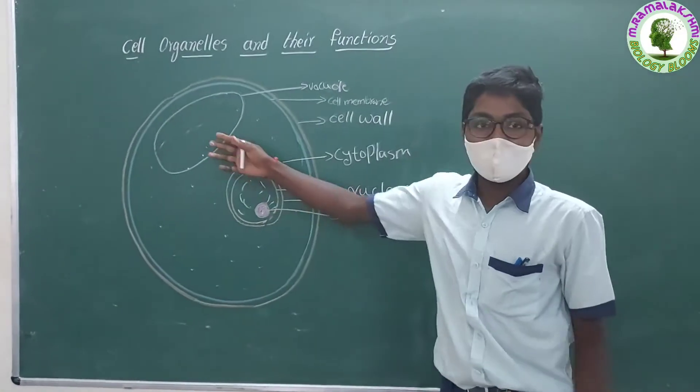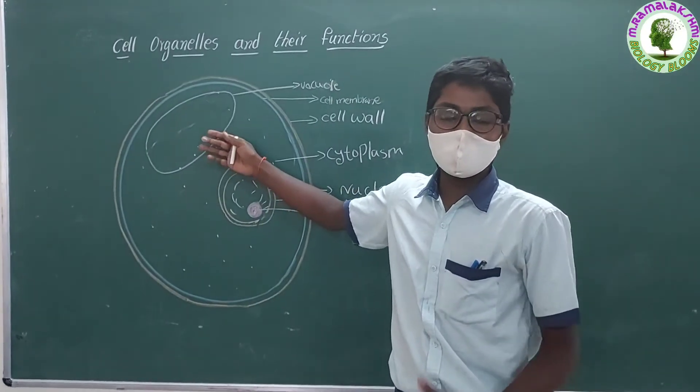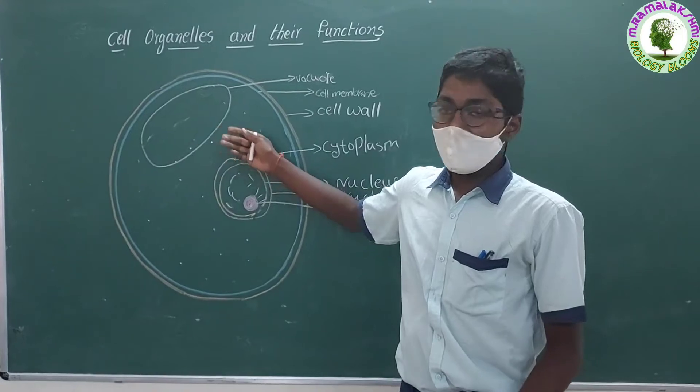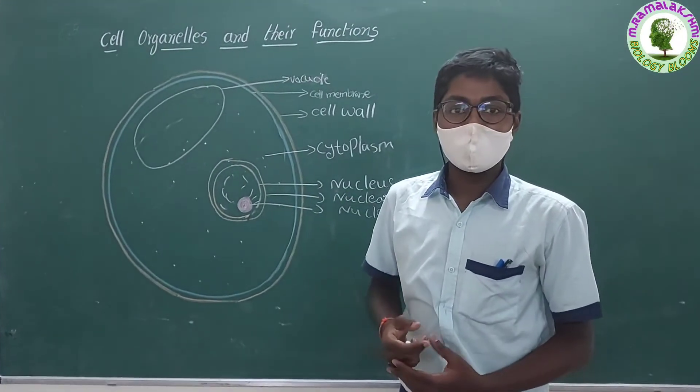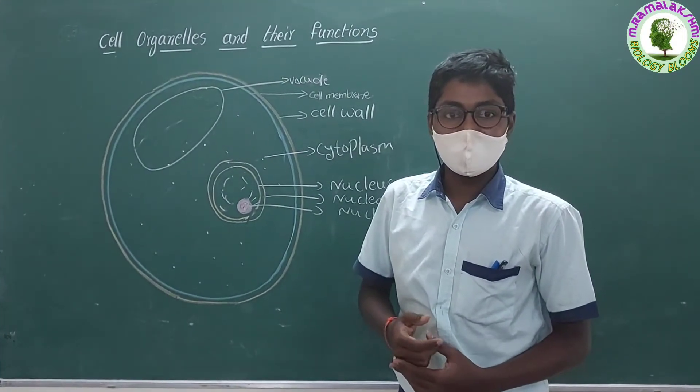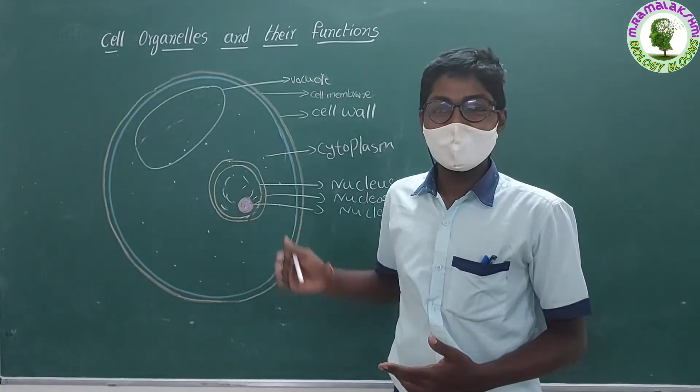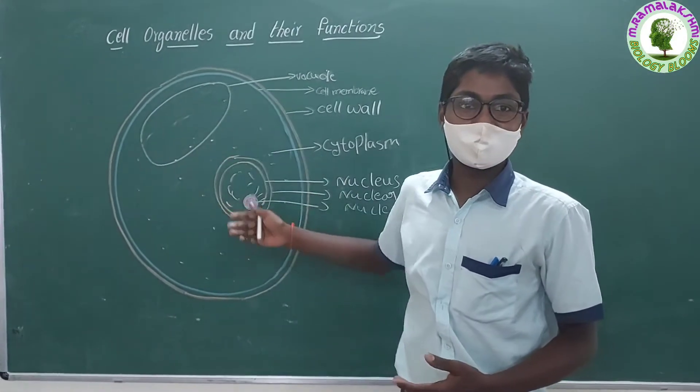I am a vacuole. I am a storage sac for solid or liquid content. In lower animal cells, I am small in size, while in plant cells, I am large. In higher animal cells, I am absent.